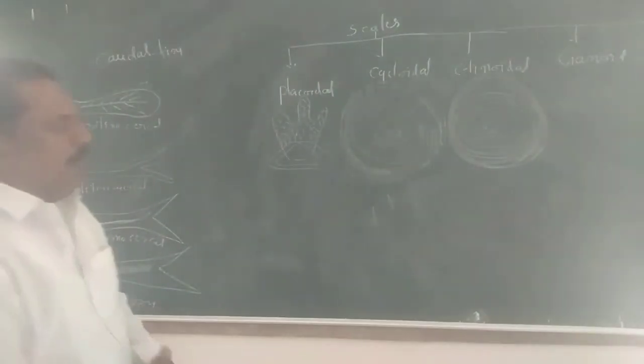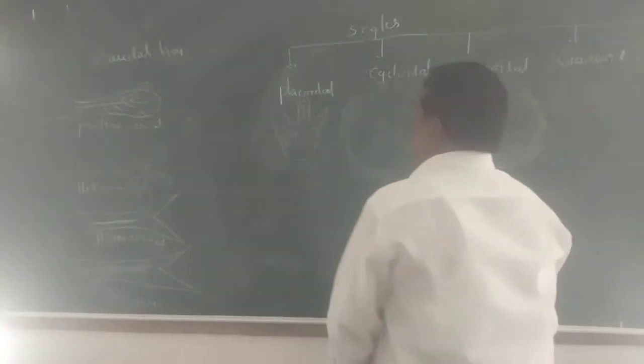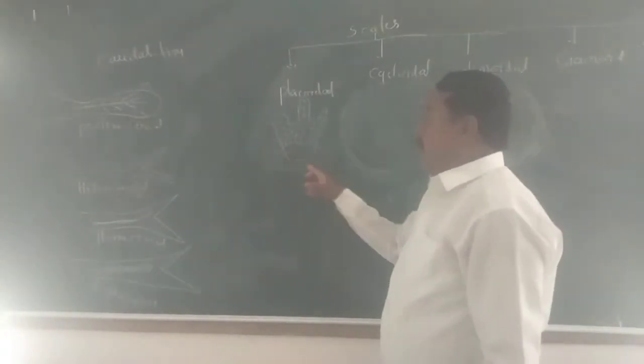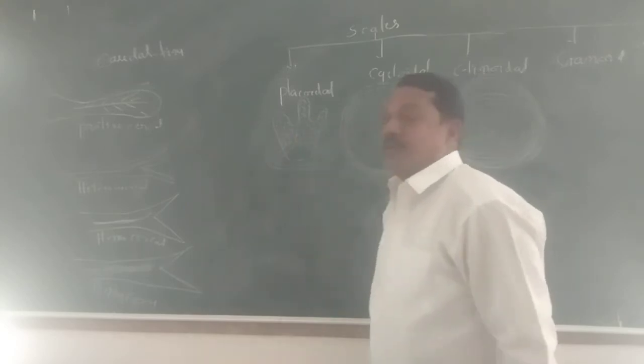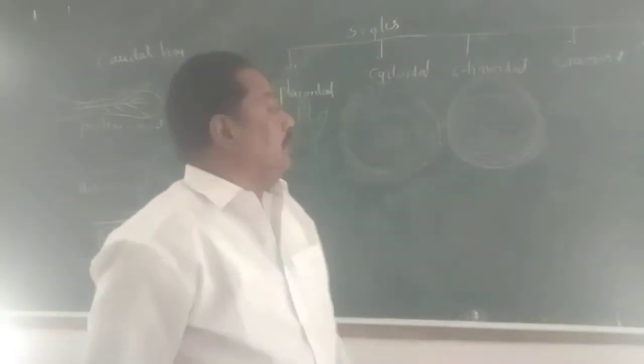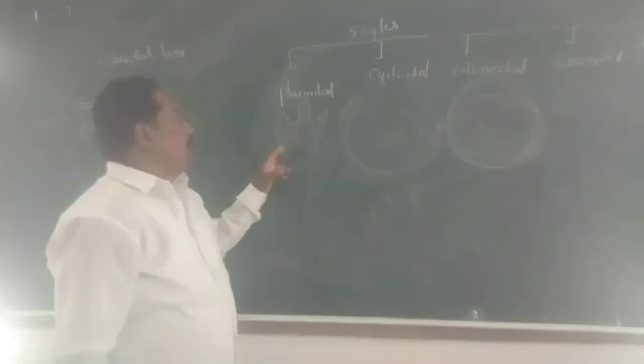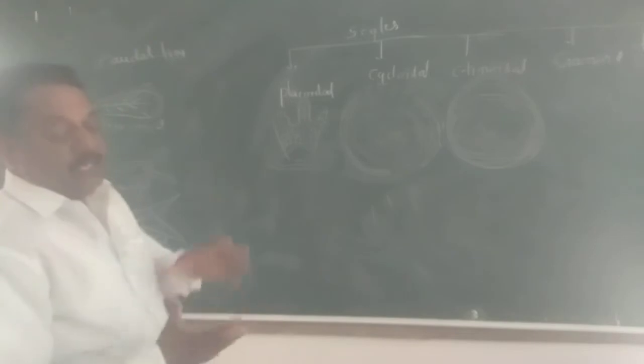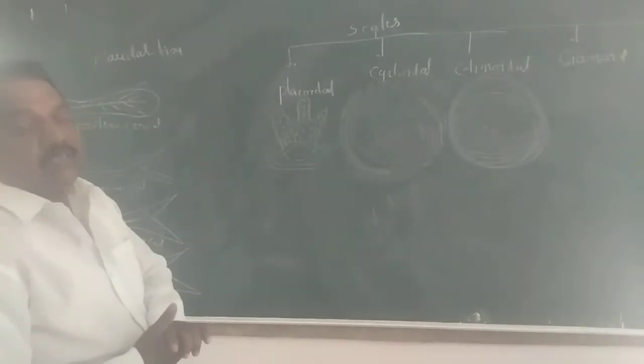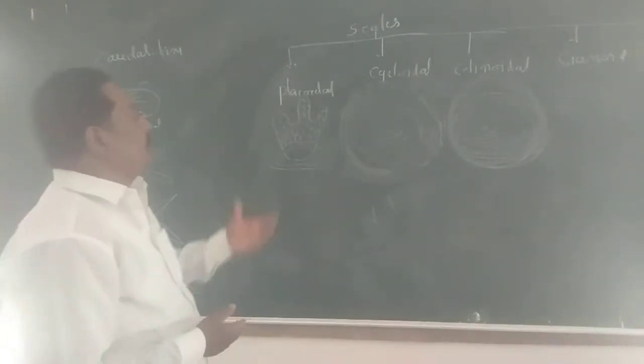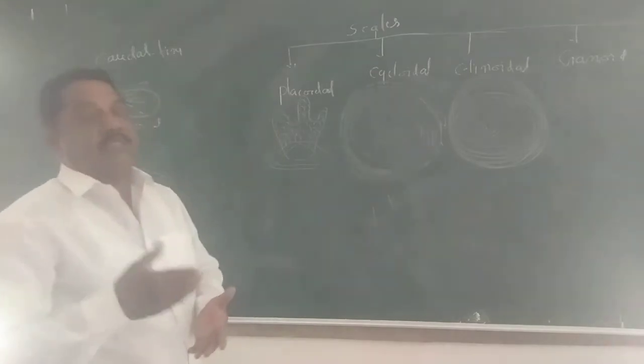In this placoid scale, two important parts are present: basal plate and trident. The basal plate is embedded and fixed in the skin of the fishes, and trident is present outside of the skin.